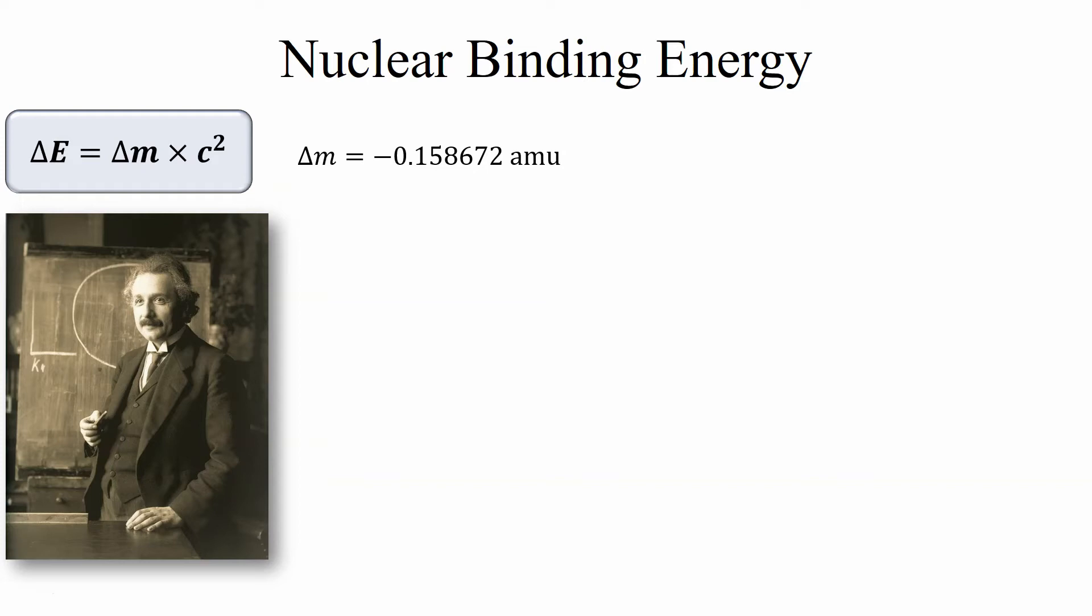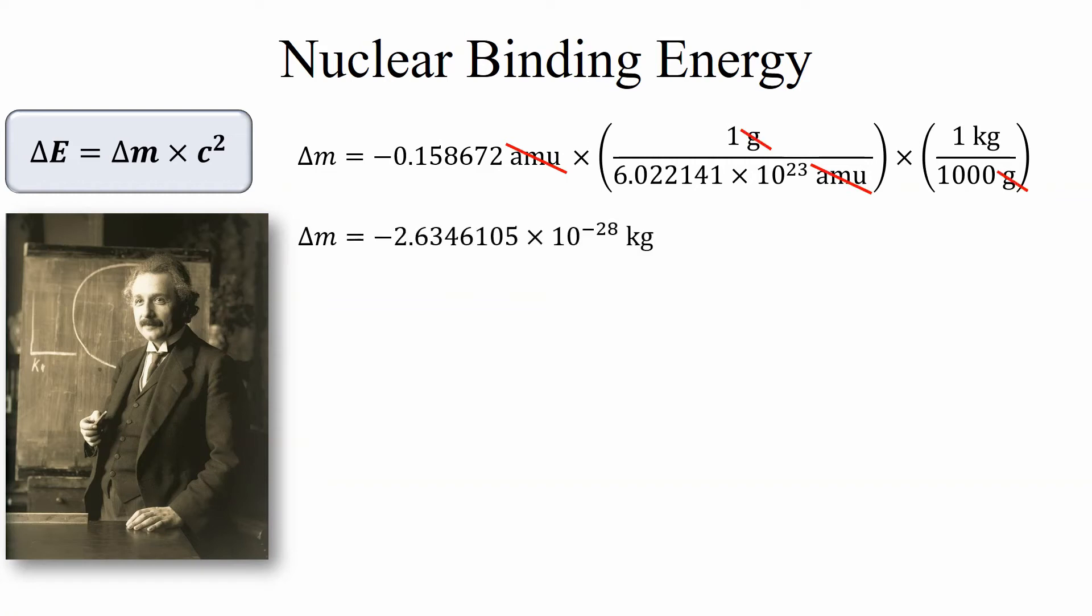Now these mass defects are very small so we have to do these calculations at very high precision. So if we take our mass defect which as you recall is negative and we convert this to kilograms we have a fairly small number. So if we wanted to create one atom of fluorine-19 the difference in mass is very very small.